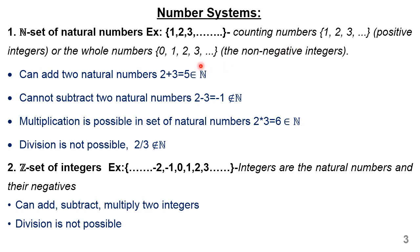Let us see what operations are allowed in the case of the set of natural numbers. The first one is you can add two natural numbers. When I add two natural numbers, whatever result I get is going to be a member of the set of natural numbers. For example, if I take two and three, when I add I get five, and five is a member of N.